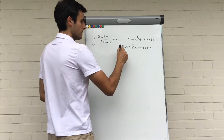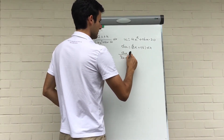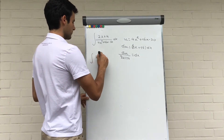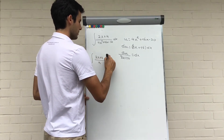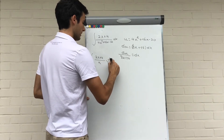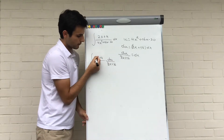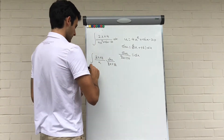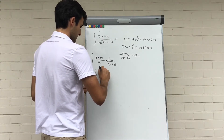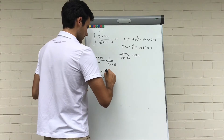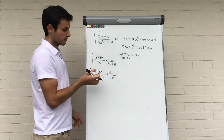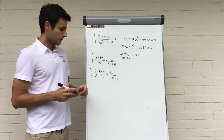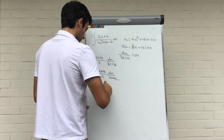So what do we get now? Derivative of u divided by 8x plus 16 equals dx. We can replace some things: we get (2x plus 4) divided by u, multiplied with du divided by (8x plus 16). Now, 8 is 4 times 2 and 16 is 4 times 4, so we can put one-fourth in front of the integral. We then have 2x plus 4 in both numerator and denominator, so they cancel. The last step gives us one-fourth times du divided by u.